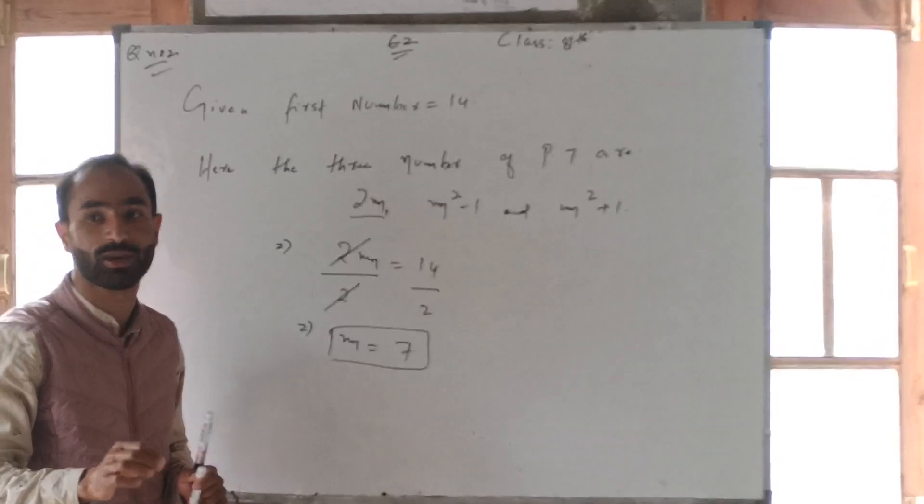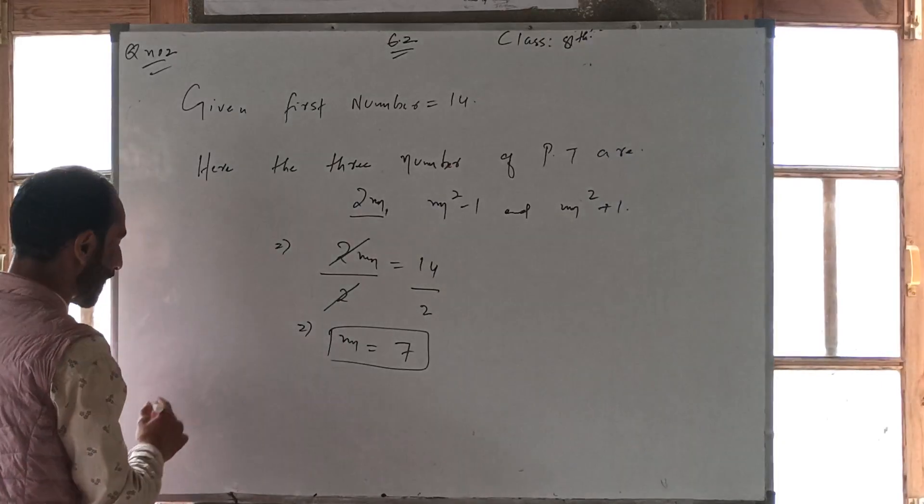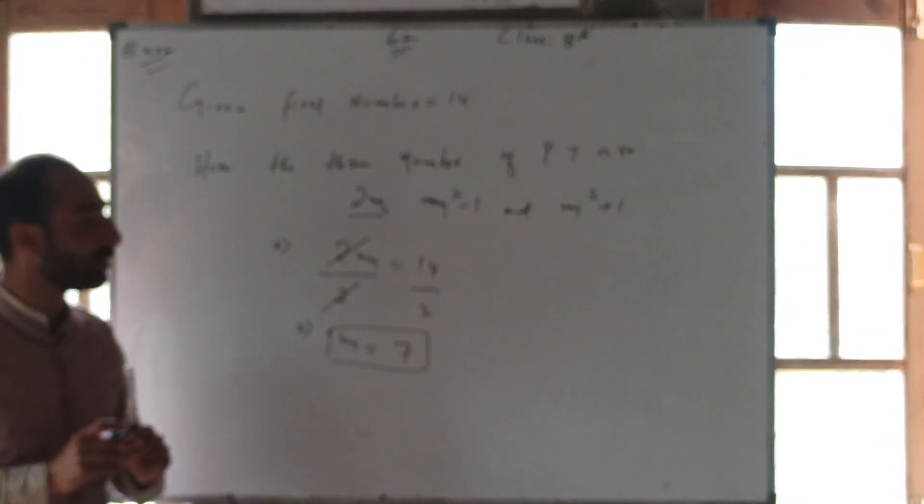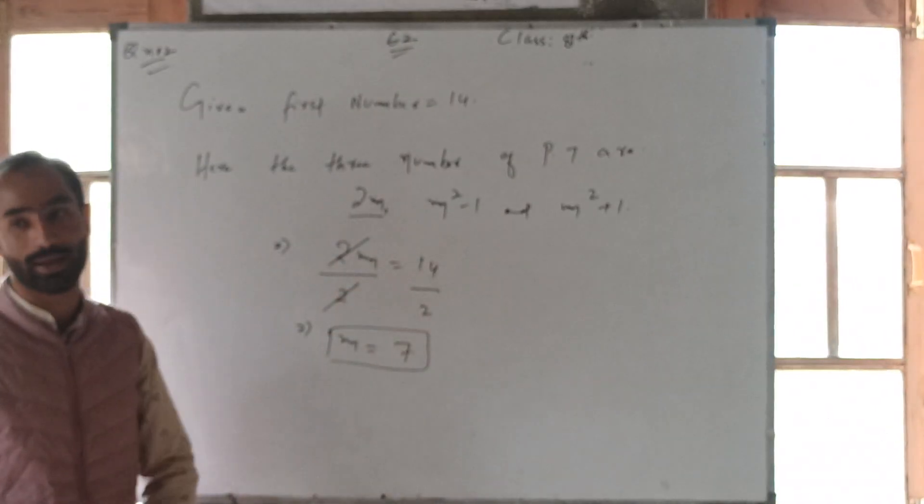Now I want the second value. First, already question is given. Second, which we have to take first triplet, we have to take second number. The formula is m square minus 1.